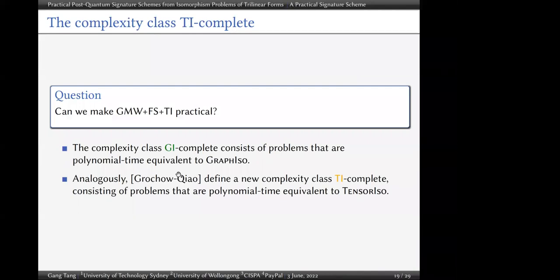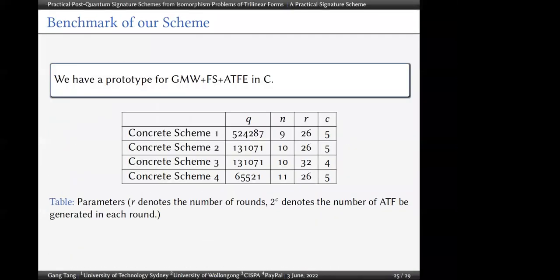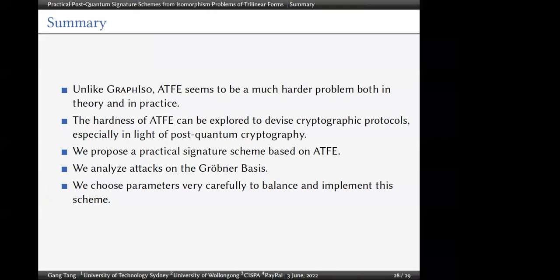In summary: unlike graph isomorphism, ATFE appears to be a much harder problem both in theory and in practice. The hardness of alternating trilinear form equivalence can be exploited to devise cryptographic protocols, especially in light of post-quantum cryptography. We propose a practical signature scheme based on this problem, analyze Gröbner basis attacks, carefully choose reasonable parameters, and provide an implementation.